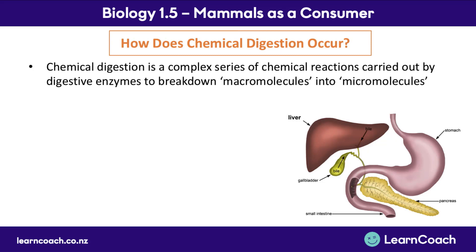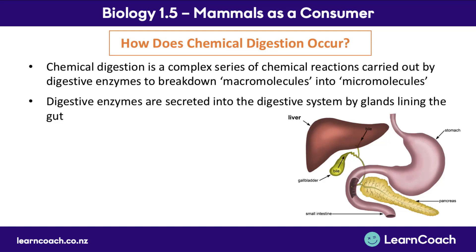So how exactly does chemical digestion work? Chemical digestion is essentially a series of chemical reactions carried out by digestive enzymes — those pairs of chemical scissors — which break down large food molecules, called macromolecules (macro meaning large), into really small pieces called micromolecules (micro meaning small). These digestive enzymes are secreted into the digestive system by glands lining the gut, such as the salivary glands in the mouth.